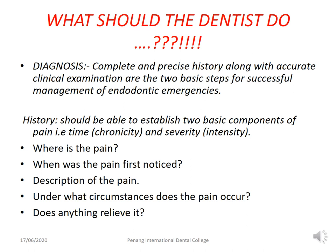When a patient reports to the dental clinic with severe pain due to pulpal or periapical infections requiring immediate attention, first and foremost an accurate diagnosis is required, which includes complete and precise history taking along with clinical examination. These are the two most important basic steps required for successful management of endodontic emergencies. History taking should establish two components: time and severity.